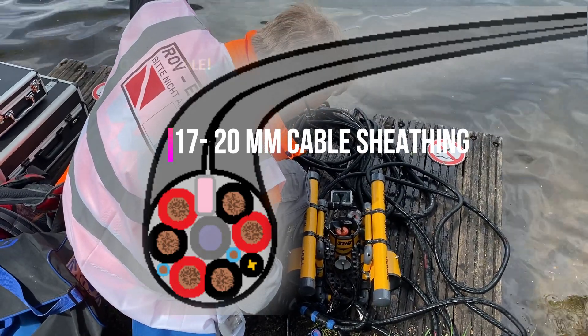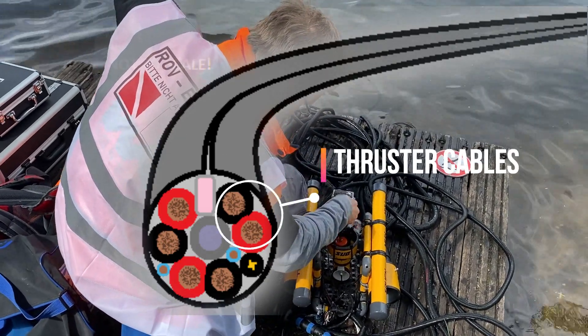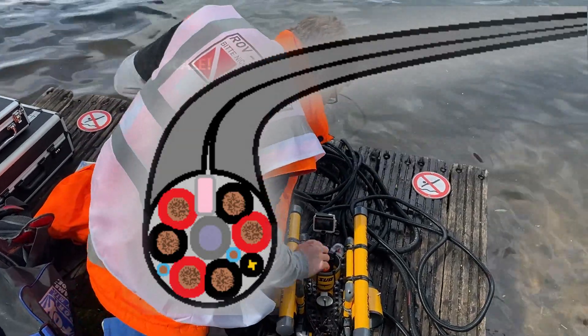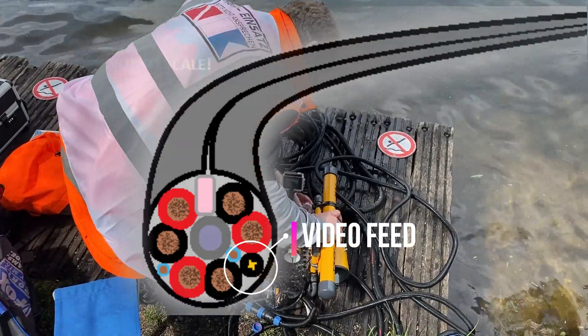Take 17-20mm cable sheathing, which gives you more than enough room for your three pairs of thruster cables, also your slender video feed line, which is usually quite thin.